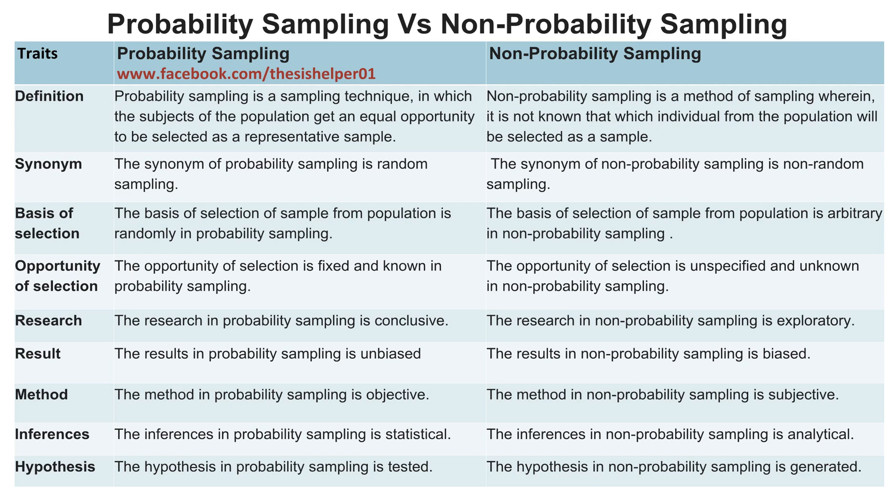The opportunity of selection is fixed and known in probability sampling, whereas the opportunity of selection is unspecified and unknown in non-probability sampling.